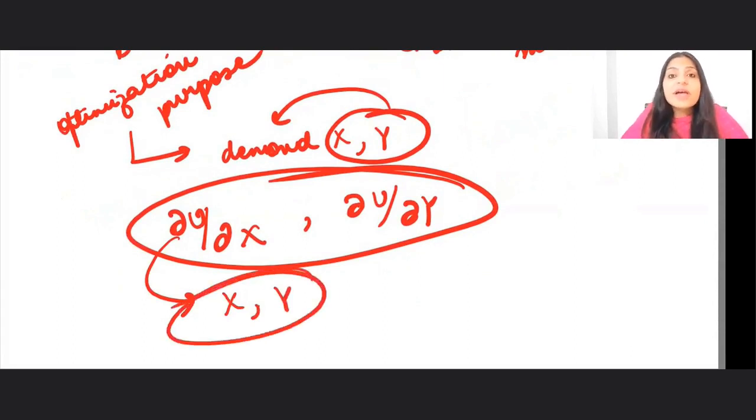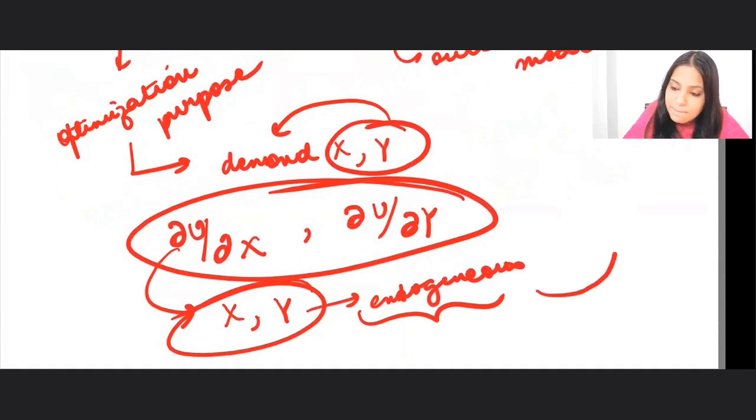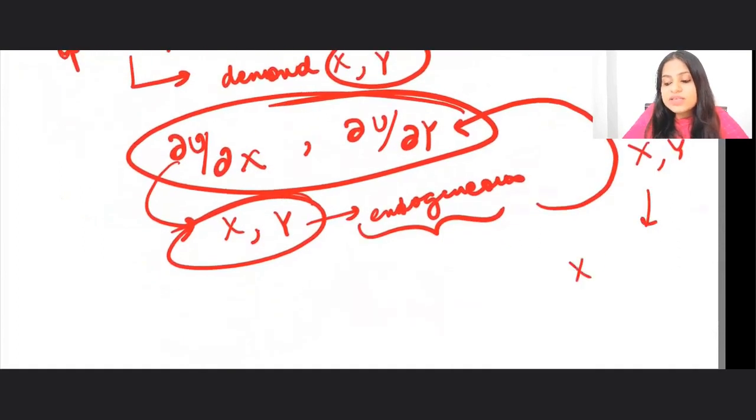Because ultimately, I have to determine this x and y within my model. I have to find out what is the equilibrium value of x and y. That is what my aim is. This is the reason why they would be known as endogenous variables. They would be determined within the model. And this is the reason why I would be maximizing my utility with respect to this x and y. And I would be getting some x star, y star as my equilibrium.